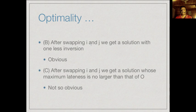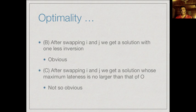The next observation is that we can remove this inversion by swapping these two consecutive jobs. If i and j have an inversion and we exchange them — putting j before i — then d(j) < d(i) and this inversion is gone. What is not obvious is that this swap will not affect the quality of the solution. We need to ask whether after swapping i and j, the maximum lateness is no larger than that of O.